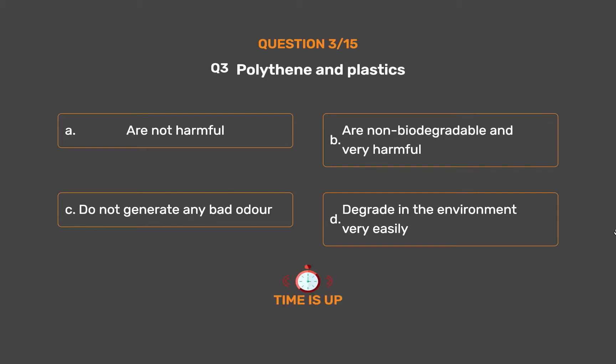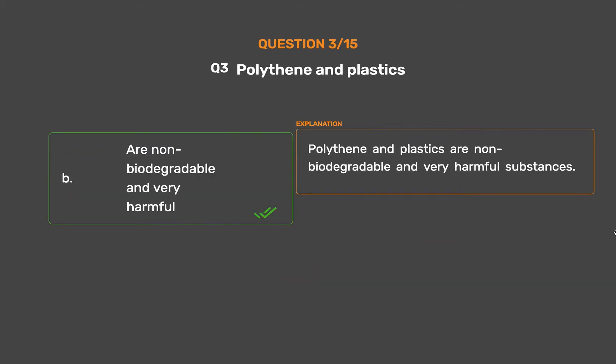The correct answer is Option B: Are non-biodegradable and very harmful. Polythene and plastics are non-biodegradable and very harmful substances.